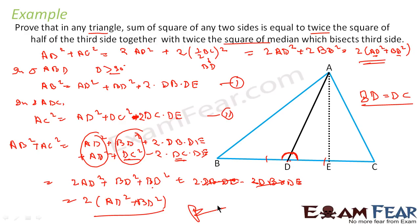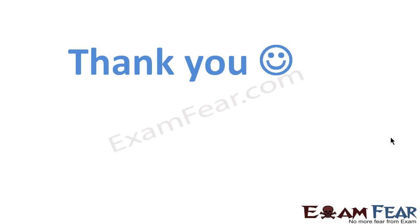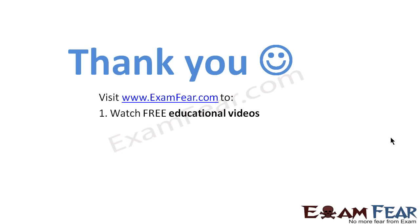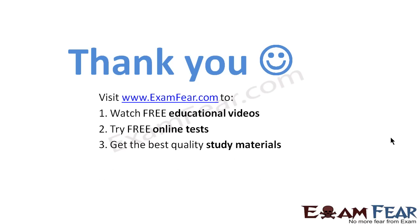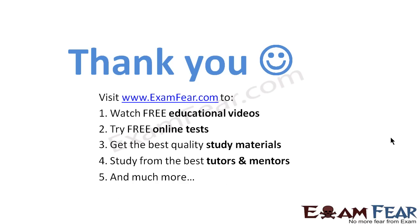Hence proved. Very simple — within triangle ABC we found two sub-triangles, got AB² in terms of AD² and BD², got AC² in terms of AD² and CD², added them, and got the result. Thank you. Visit examfear.com to watch free educational videos, try free online tests, get the best quality study materials, and study from the best tutors and mentors. Thanks once again.